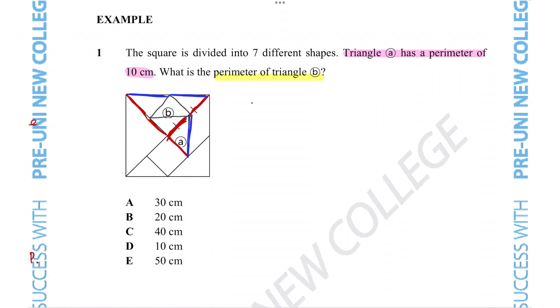We can see that the perimeter of triangle B is simply twice the length of triangle A. So since triangle A has a perimeter of 10 centimeters, the perimeter of triangle B will be double that, equal to 20 centimeters. So the correct answer option will be option B.